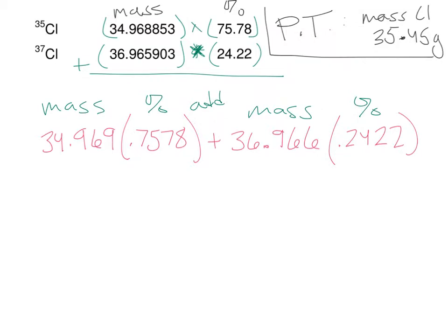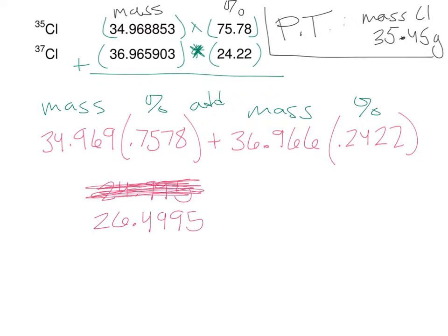Using my calculator, I get 26.4995 for the first product — 34.969 times 0.7578. Then I multiply 36.966 by 0.2422, which gives me 8.953. Adding those together: 26.4995 plus 8.953.